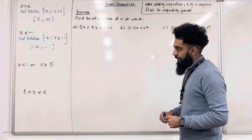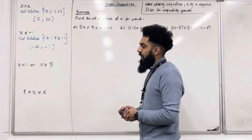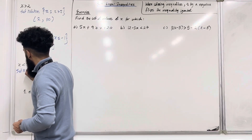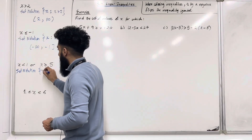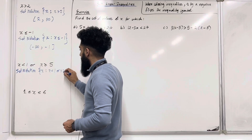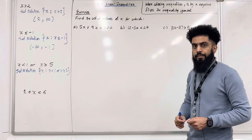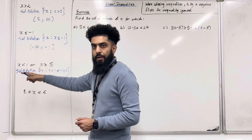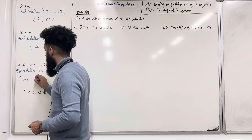Let's have a look at the third inequality: X is less than 1 or X is greater than or equal to 5. In set notation, we have the set of values of X such that X is less than 1 or X is greater than or equal to 5. For the interval notation, X is less than 1 gives us: curly bracket, minus infinity comma 1, close curly bracket.